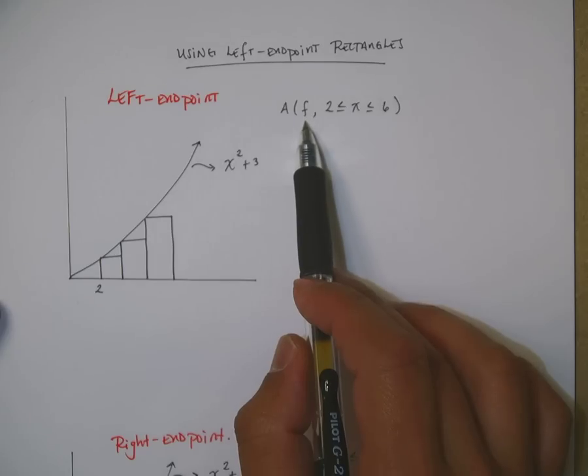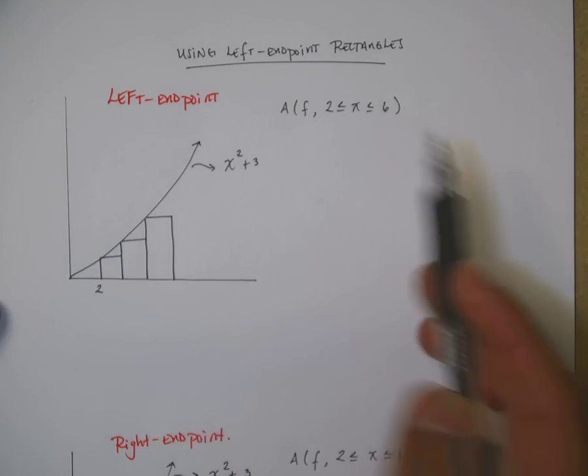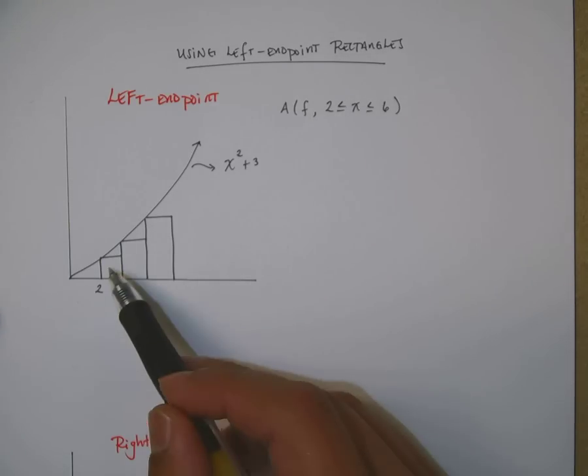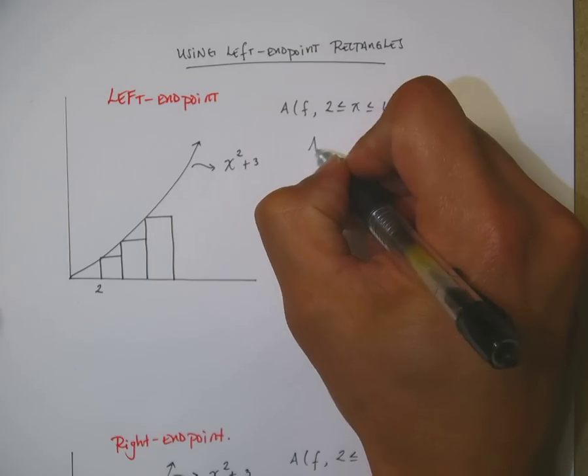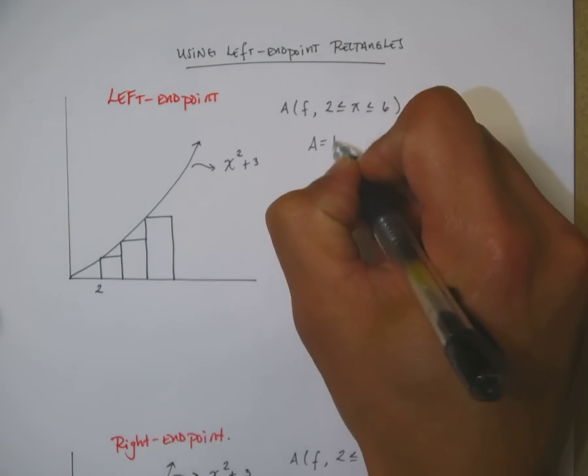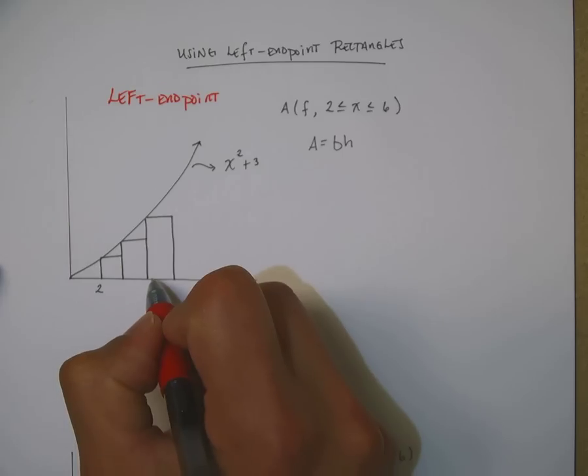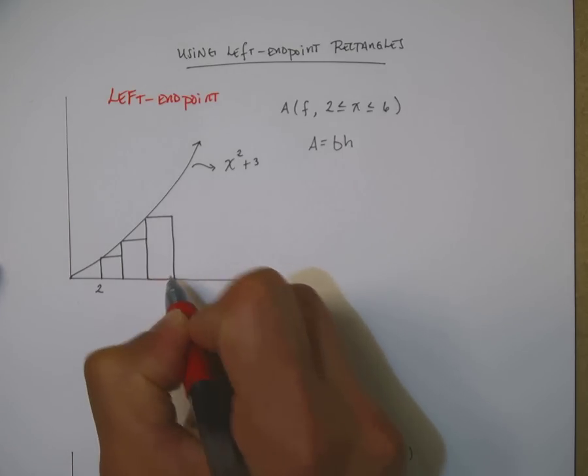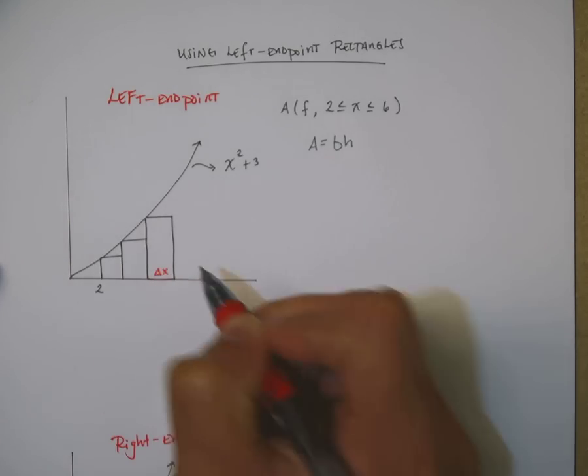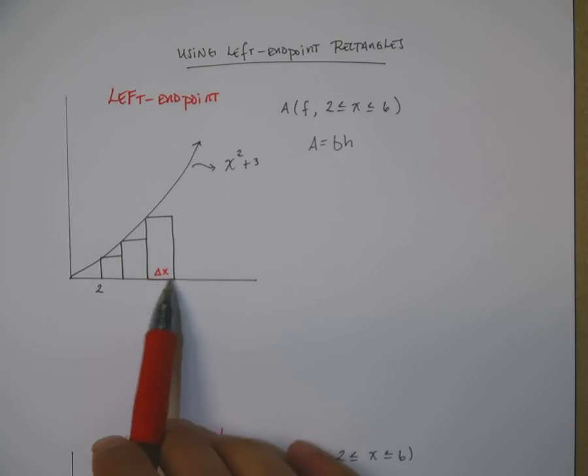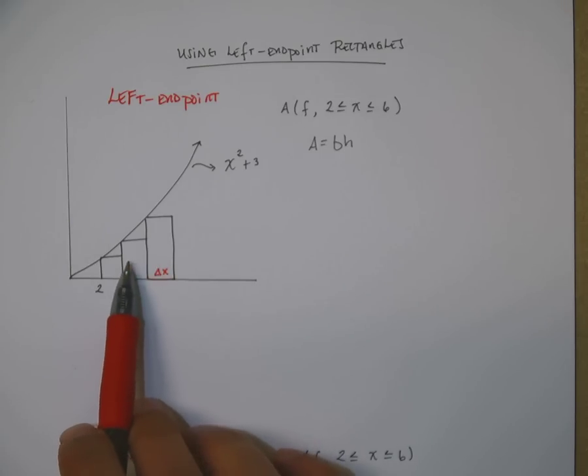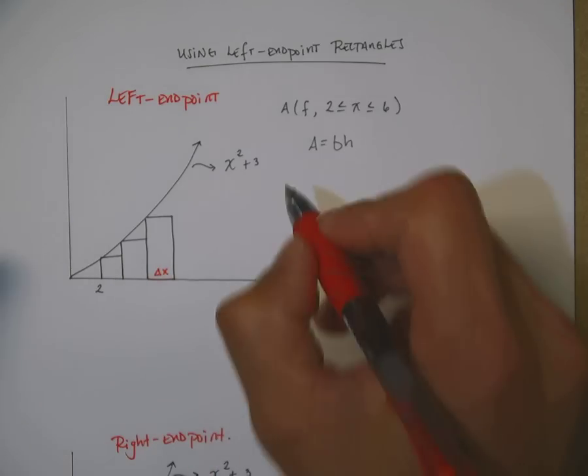We want to find the area of a certain function called f between 2 and 6. Now the easiest way to look at it is remember that area using the shape of rectangles is base times height. In this situation my base is this width right here. So this we call it the delta x in calculus. We're going to say that these rectangles are equal width. So how do you find the width?